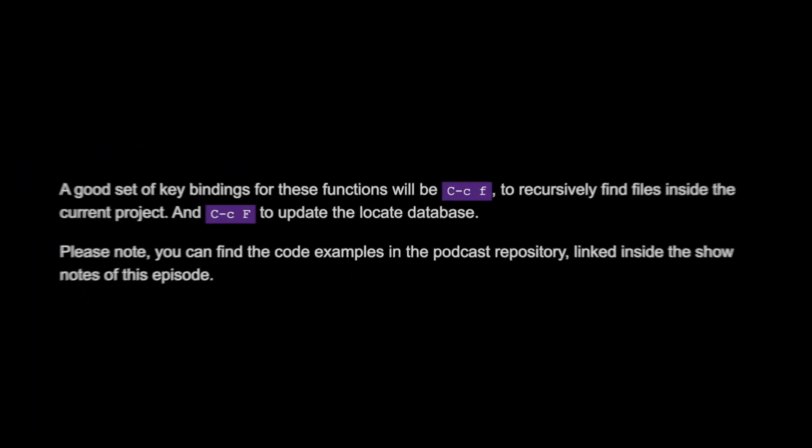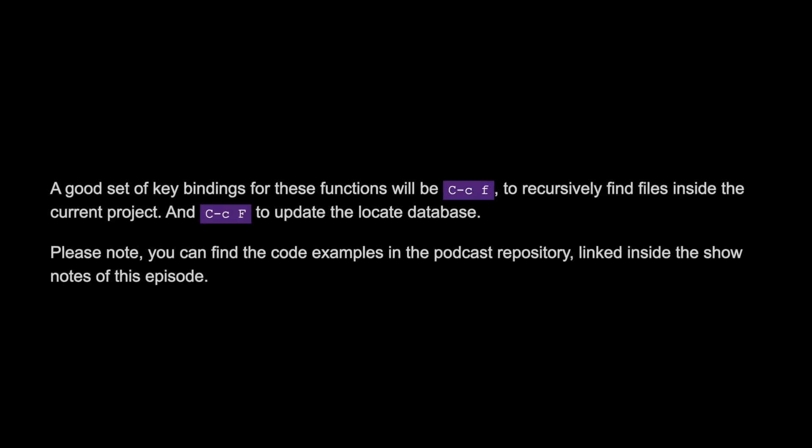A good set of key bindings for these functions will be Control-C F to recursively find files inside of the current project, and Control-C capital F to update the locate database. Please note you can find the code examples in the podcast repository linked inside of the show notes of this episode.